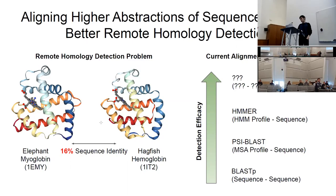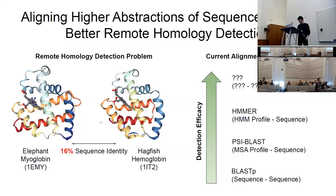In terms of the tools we have right now, there's BLAST, which does sequence alignment, then PSI-BLAST, which builds a multiple sequence alignment profile before the alignment, and then HHpred, which builds an HMM profile. In terms of homology detection efficacy, we see an increase as we align higher abstractions.